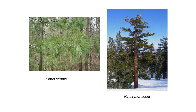Some other five-needle white pines: Pinus strobus is eastern white pine — you can see those soft five needles. Pinus monticola is western white pine, found mostly in the Sierra Nevada and Cascades.